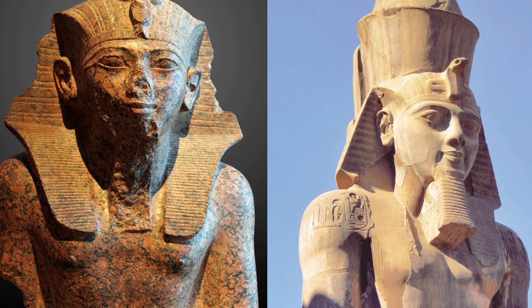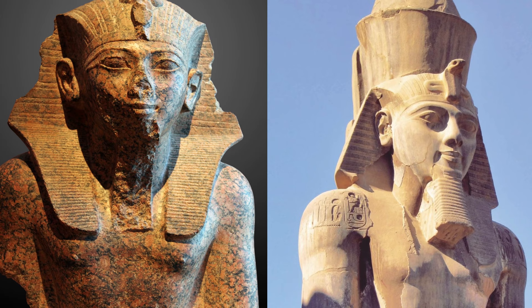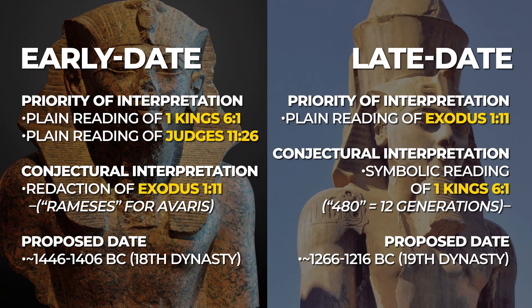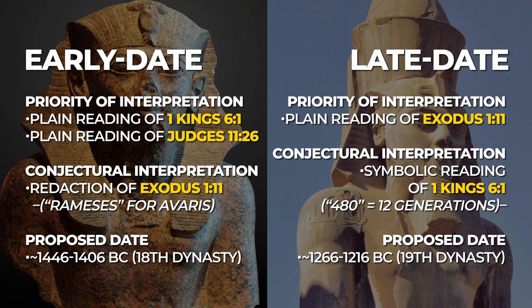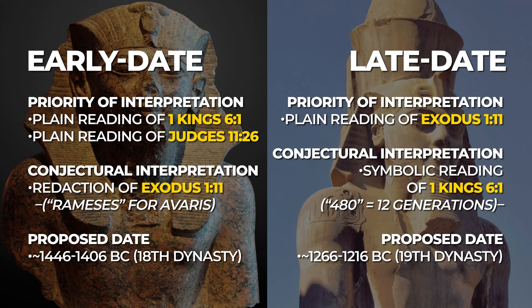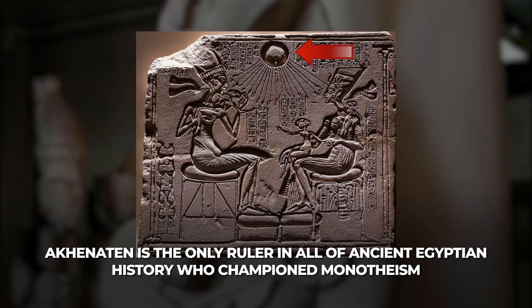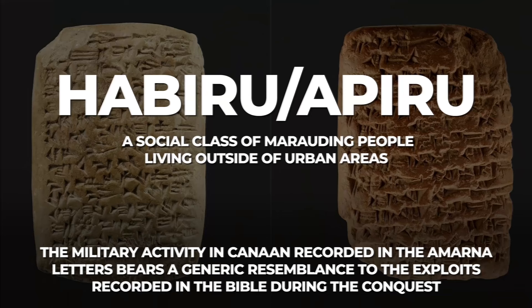In the previous videos, we established the arguments for the two major proposals regarding the date of the Exodus – the Late Date Proposal, which places the Exodus in ancient Egypt's 19th dynasty, and the Early Date Proposal, which places it approximately 200 years earlier during the 18th dynasty. We've also finished examining some very interesting circumstantial evidence relative to the Exodus narrative in ancient Egyptian history, such as the frequency of the name Moses during the New Kingdom, the presence of Egyptian cognate words in Exodus, the rise of Akhenaten's pagan monotheism, and the mention of the Habiru in the Amarna letters.